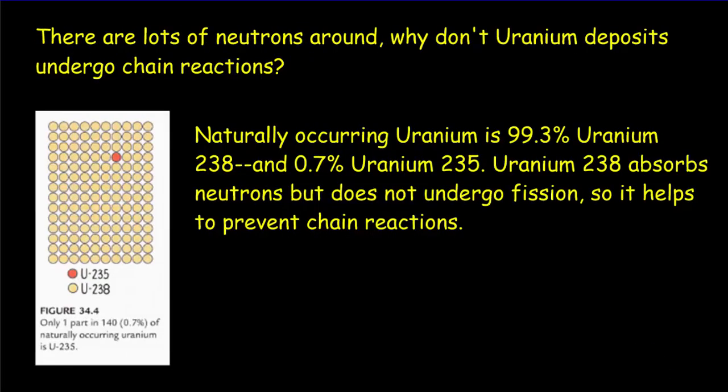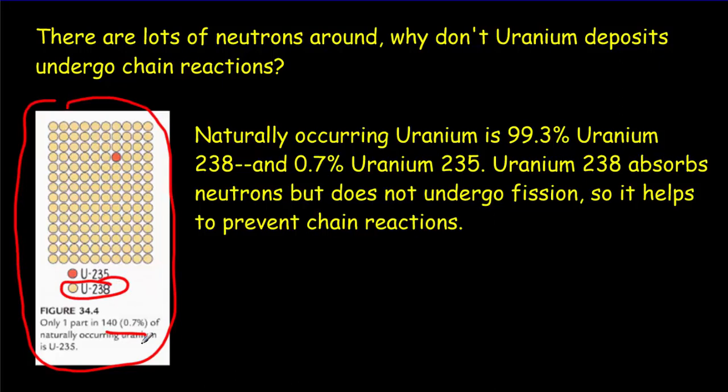Now, you might be asking yourselves, I know there's uranium deposits out there. They mine for uranium. There must be some chunks of uranium around that are bigger than the critical mass. Why aren't these exploding? Well, it turns out that that uranium, the naturally occurring uranium, is mostly this uranium-238. It's only about 0.7% of all that uranium that's going to be the dangerous stuff, the 235.